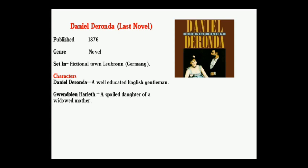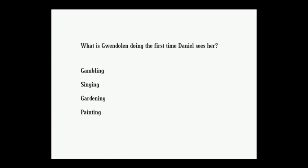Next question: what is Gwendolen doing the first time Daniel sees her? Options: gambling, singing, gardening, painting. Correct answer: gambling.